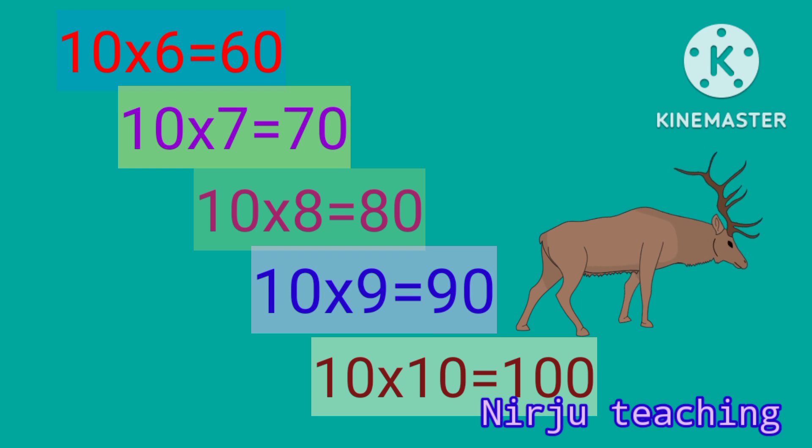Ten times 6 is 60, ten times 7 is 70, ten times 8 is 80, ten times 9 is 90, ten times 10 is 100.